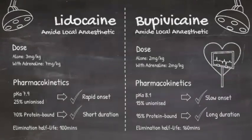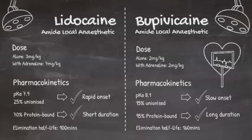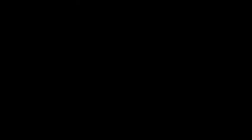Bupivacaine is presented as a mixture of both its isomers, but you can give the pure S-enantiomer, levobupivacaine, which is often referred to by its trade name Chirocaine. Compared to the mixture, levobupivacaine is less cardiotoxic, displays less motor block, has less vasodilatation, and is more protein bound, giving it a longer duration of action.